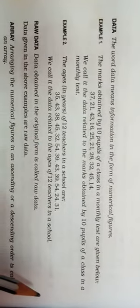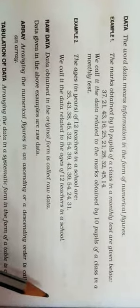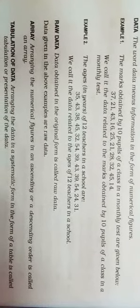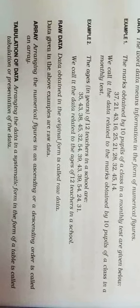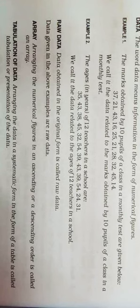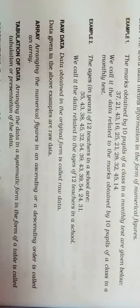Next, raw data: the data obtained in its original form is called raw data. The data given in the above examples — example 1 and example 2 — is called raw data. Next, array: arranging numerical figures in ascending order or descending order is called an array. Either ascending or descending order — that arrangement is called an array.